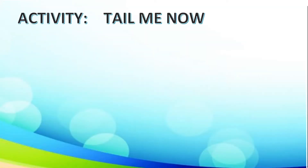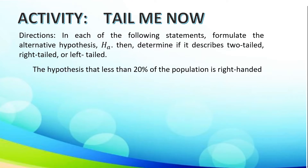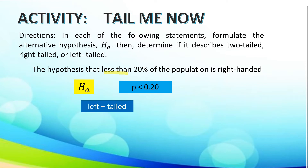Moving on, let's have the activity entitled Tailed Now. The direction states: in each of the following statements, formulate the alternative hypothesis, then determine if it describes two-tailed, right-tailed, or left-tailed. Given the statement: the hypothesis that less than 20% of the population is right-handed. The keyword is less than, which means P is less than 0.20. It falls under the left-tailed test.